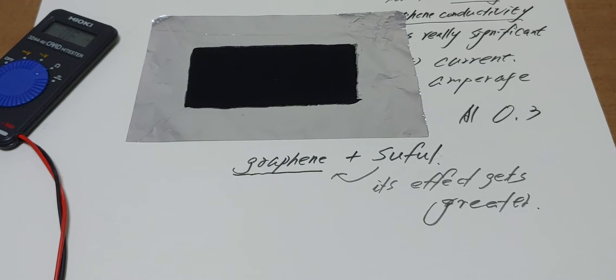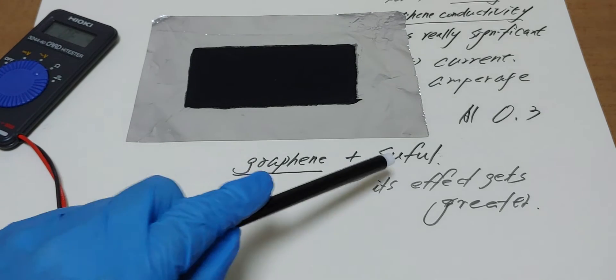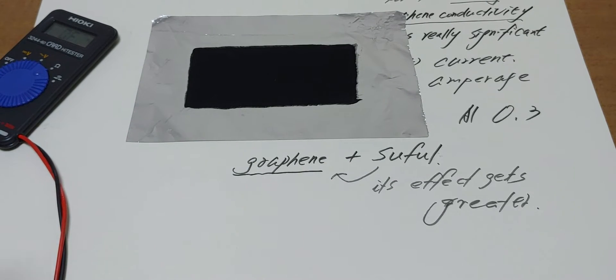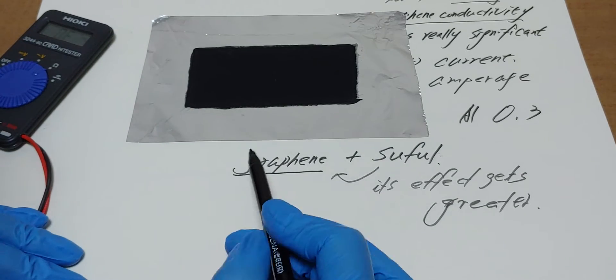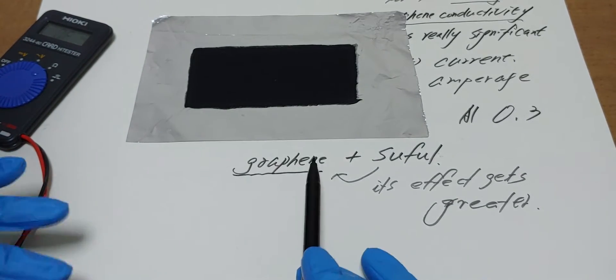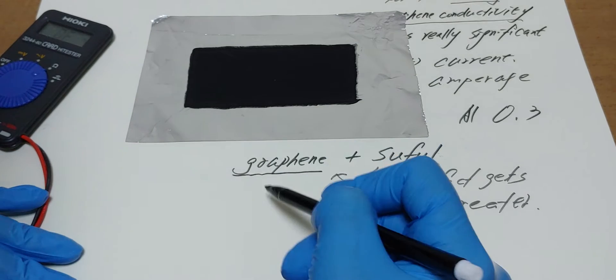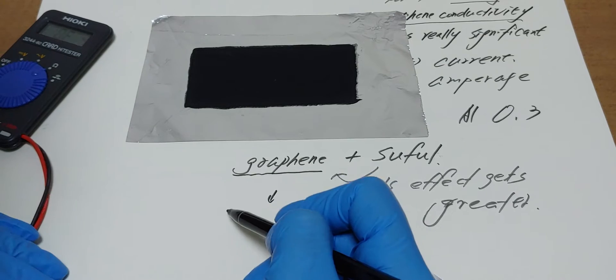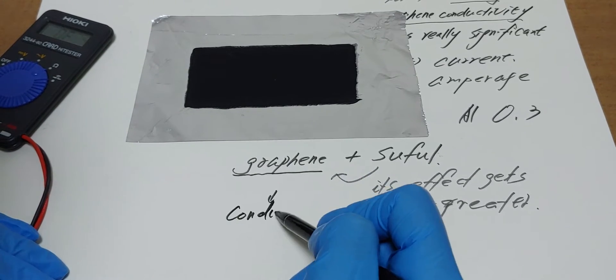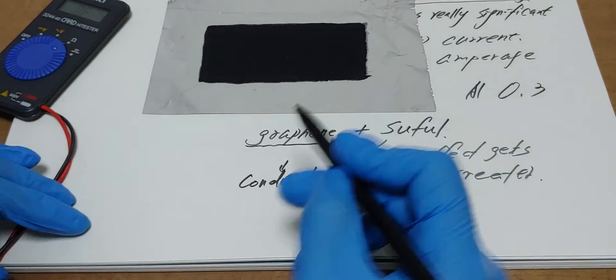So, I mixed graphene with sulfur. The conductivity of graphene is very good, but with sulfur, the ohm increases. The conductivity decreases.